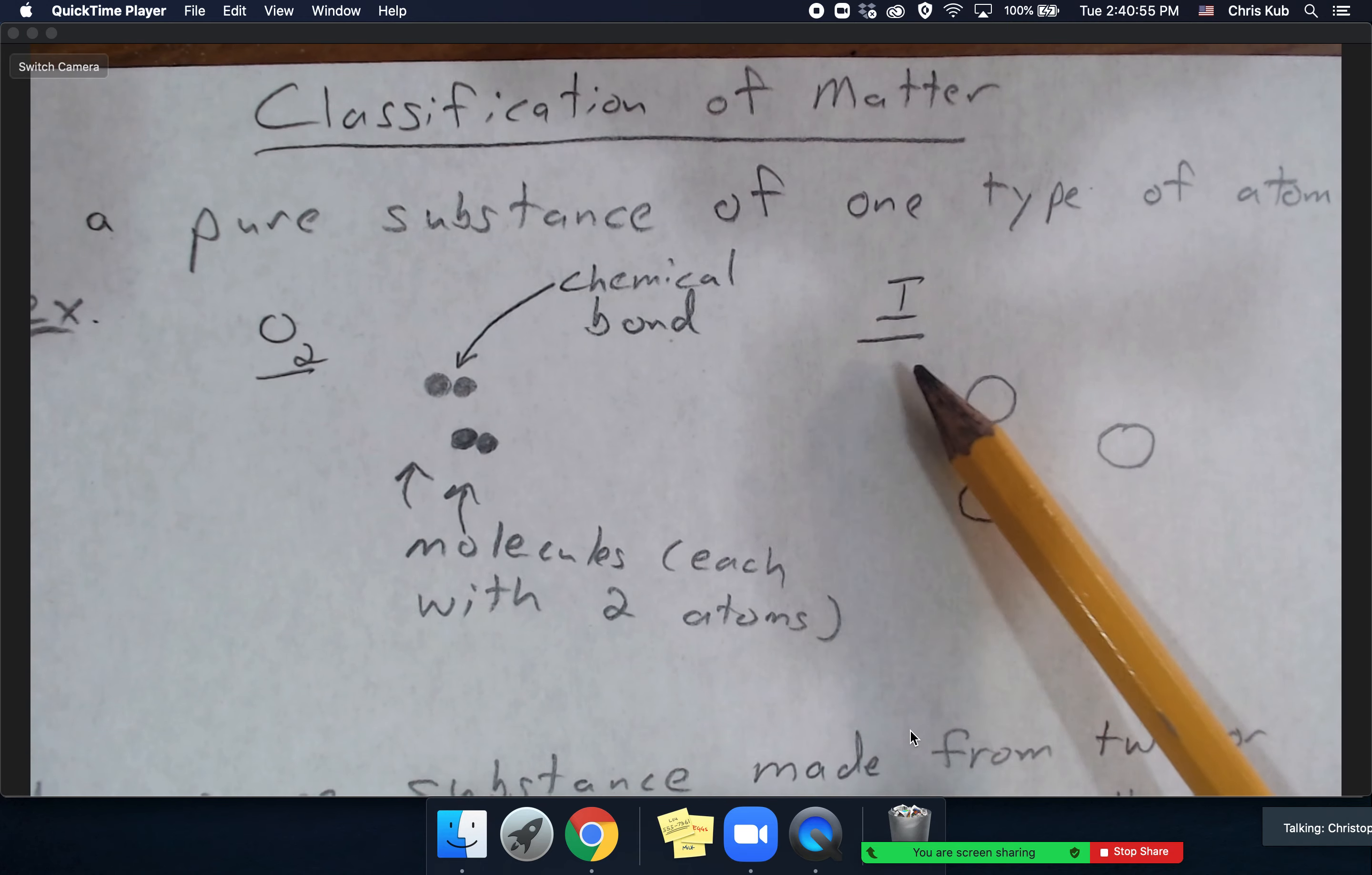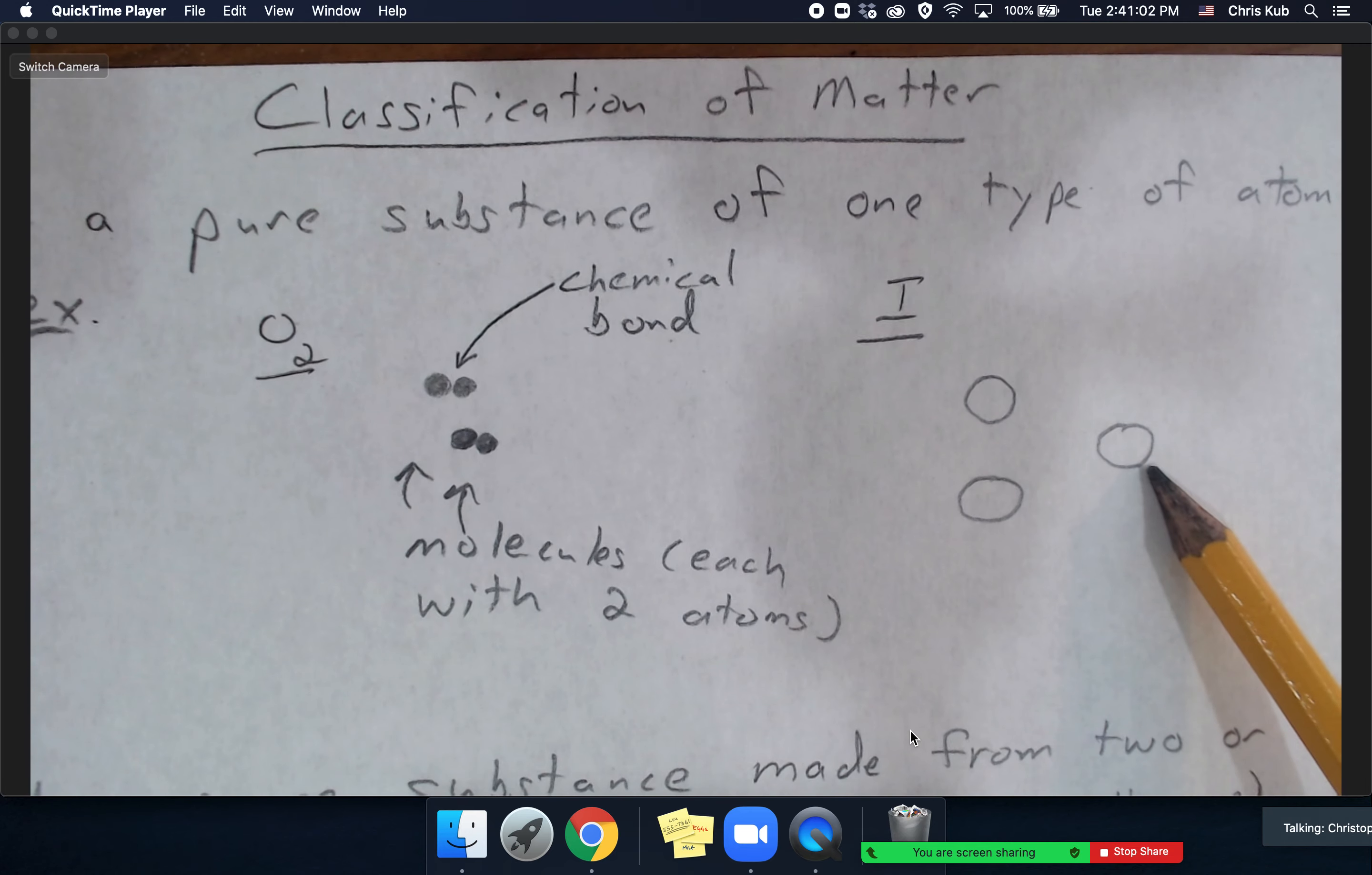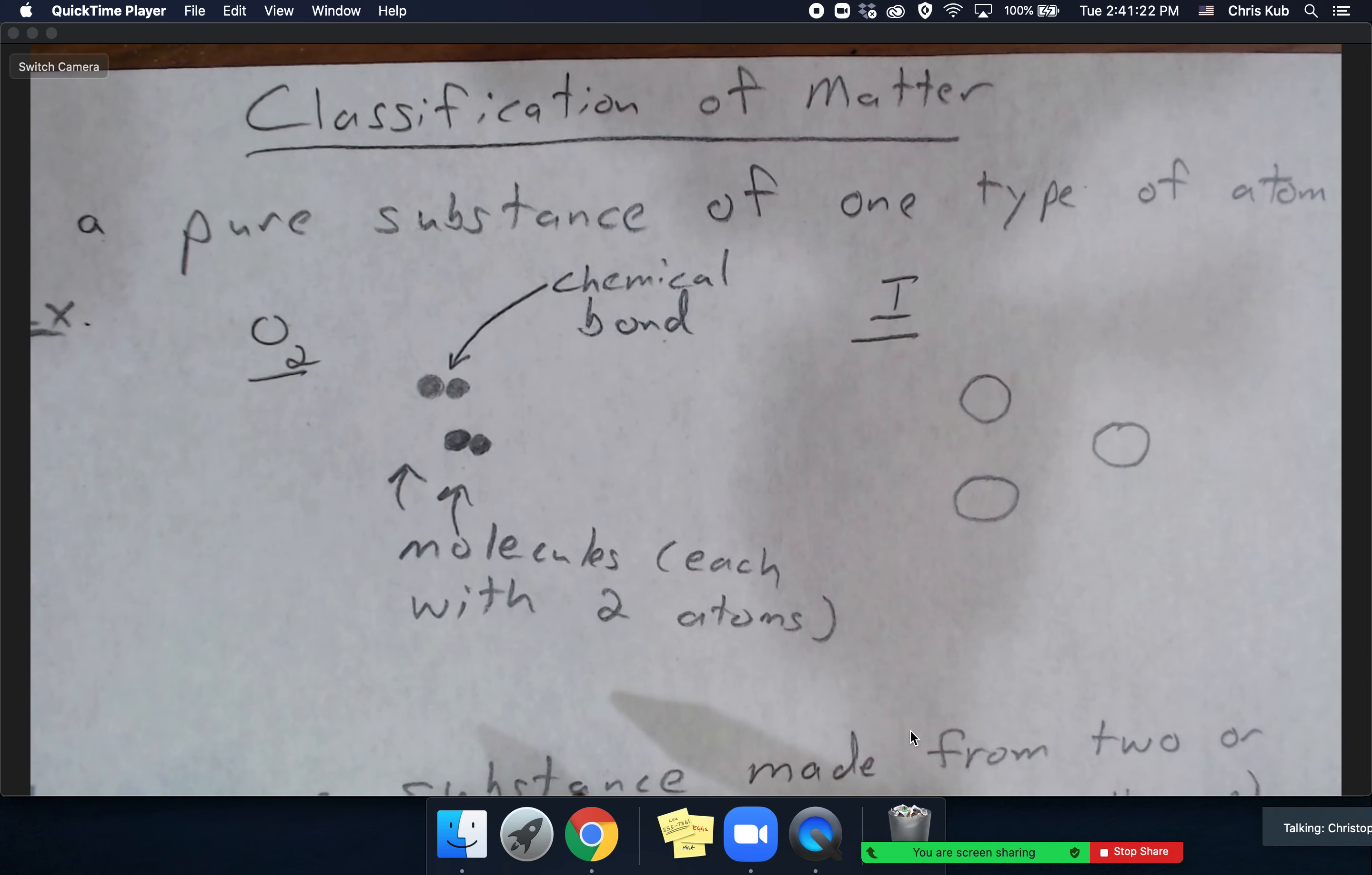For example, you might find monoatomic iodine where individual atoms of iodine might float around as gas or liquid, or you might have molecules of an element. For example, if you had some pure oxygen, in that case you would have two different atoms that are chemically bound together.